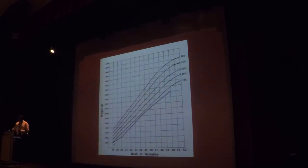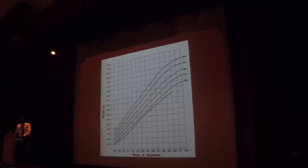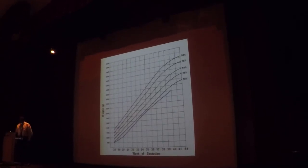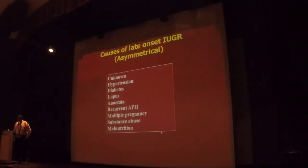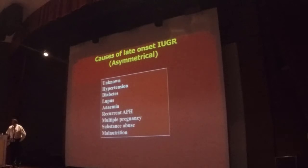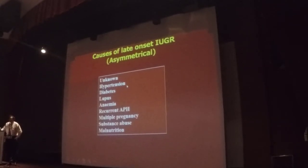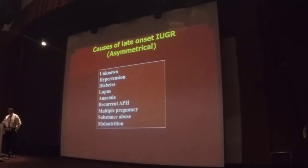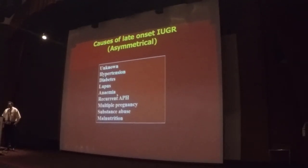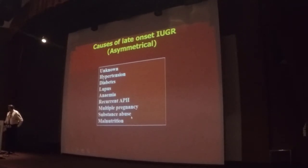Symmetrical IUGR persists until delivery. When you recognize this pattern, you should go back to the history and find out what is happening — is there any infection, any evidence of congenital anomalies on scan? The asymmetrical type is the late onset, and this is the one we commonly see in practice. The most common cause is hypertension and pre-eclampsia, usually after 26 weeks, where the baby is not growing well. Other causes include diabetes, lupus, anemia, recurrent antepartum hemorrhage, multiple pregnancy, substance abuse, and poor nutrition.